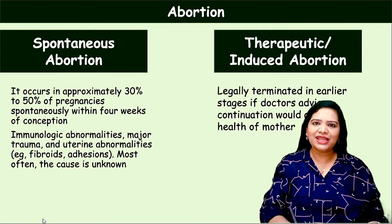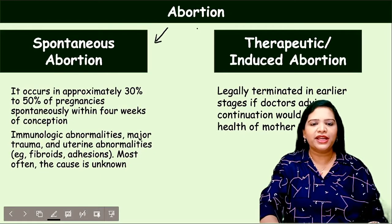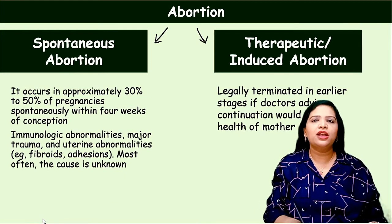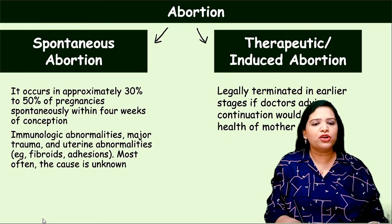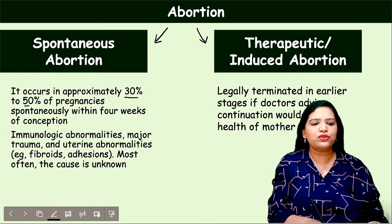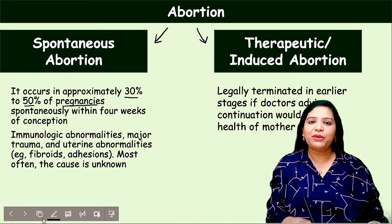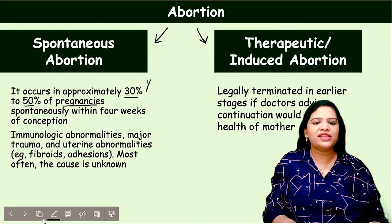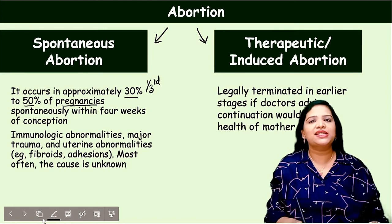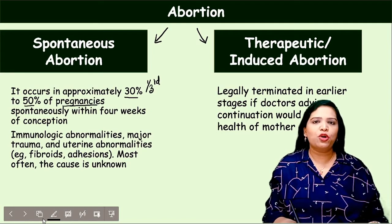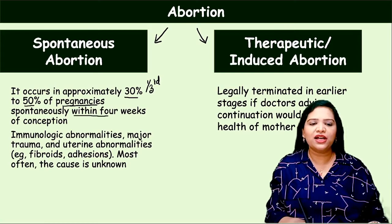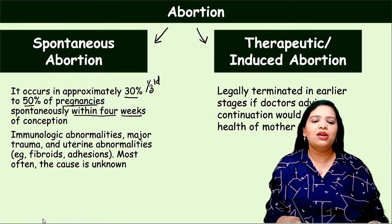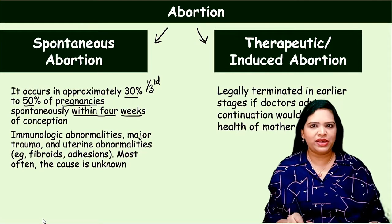We are classifying abortion into two broad categories. The first one is spontaneous abortion. Spontaneous abortion occurs in approximately 30 to 50 percent of pregnancies — almost one third of pregnancies will have spontaneous abortion. This will occur within four weeks of conception; generally it happens within the first four weeks.